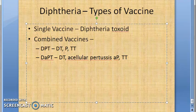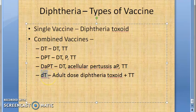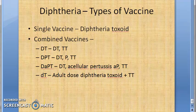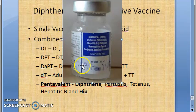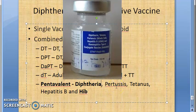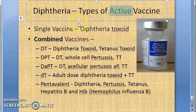Then you have DT which has diphtheria toxoid and tetanus toxoid. There is also a pertussis whole cell version and an acellular pertussis version. There is a small-d capital-T version, where small 'd' always means adult dose diphtheria toxoid with TT tetanus toxoid. The one used now is pentavalent - it has diphtheria toxoid, pertussis, tetanus toxoid, hepatitis B, and Hib - Haemophilus influenzae b, which is also a bacteria.